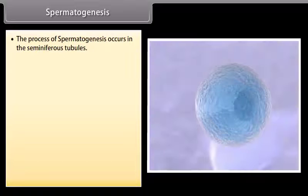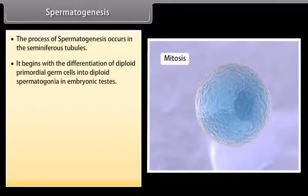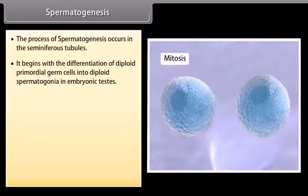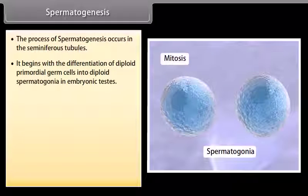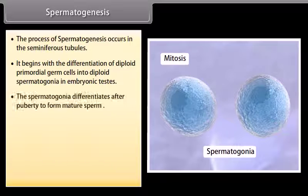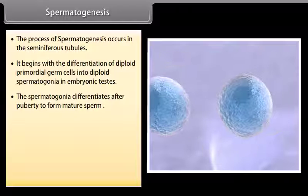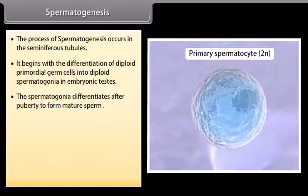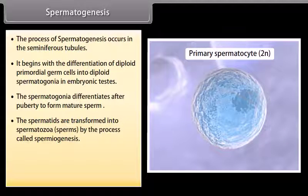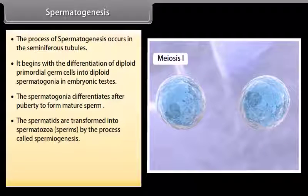Spermatogenesis is the process that occurs in the seminiferous tubules. It begins with the differentiation of diploid primordial germ cells into diploid spermatogonia in embryonic testes. The spermatogonia differentiates after puberty to form mature sperm as shown in the following diagram. The spermatids are transformed into spermatozoa or sperms by the process called spermiogenesis.